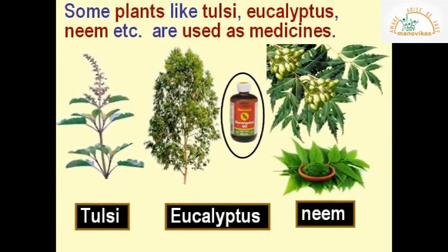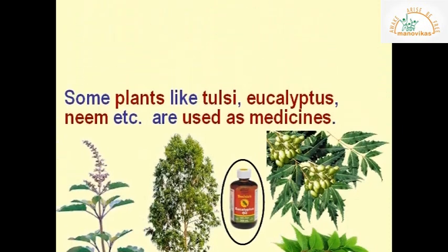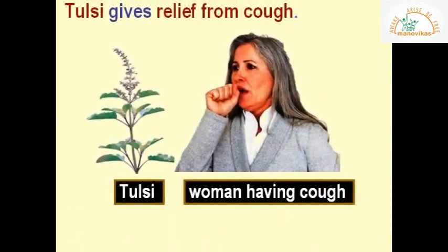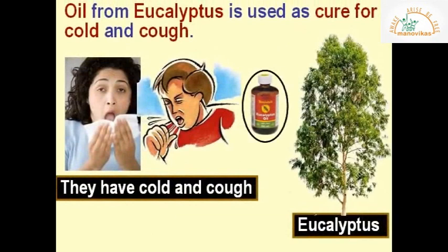Some plants like tulsi, eucalyptus, and neem are used as medicines. Tulsi gives relief from cough. Oil from eucalyptus is used as a cure for cold and cough.